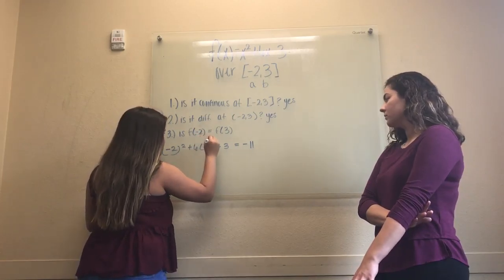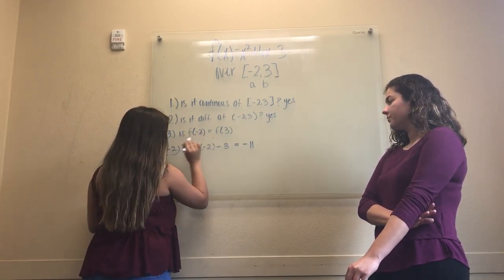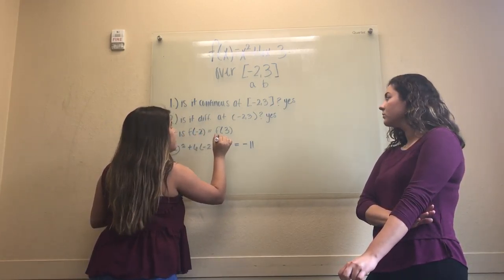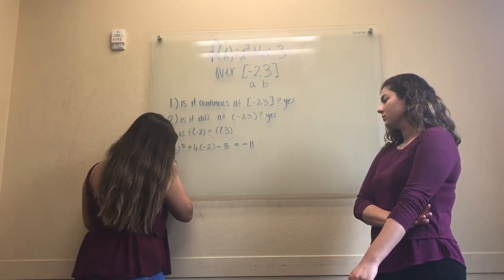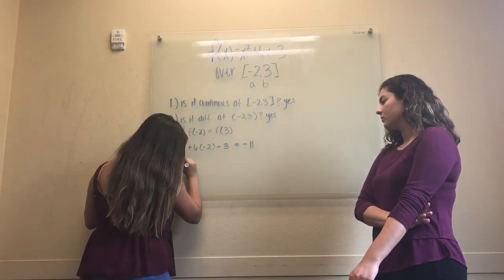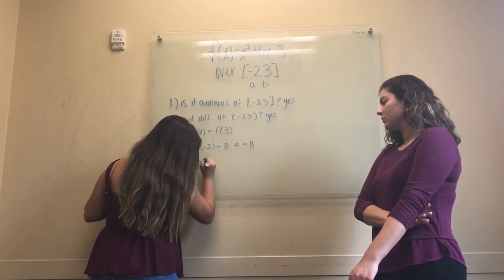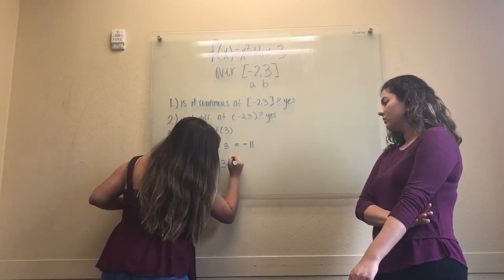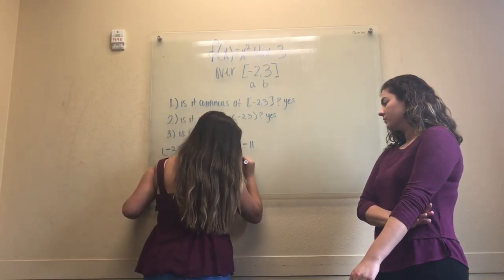For our second part of condition 3, we will be substituting 3 into all the x values. 3 raised to the power of 2 plus 6 times 3 minus 3 is equal to positive 24.